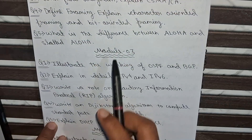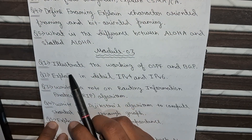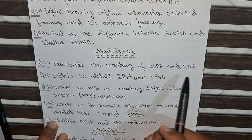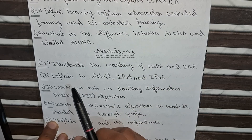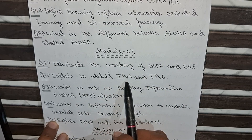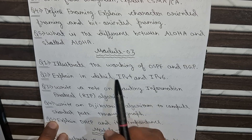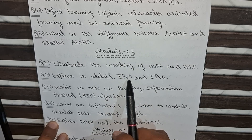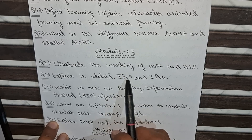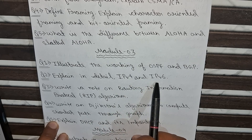The first question of Module 3 is: Illustrate the working of OSPF and BGP. The second question is: Explain in detail IPv4 and IPv6. This question may be asked in two ways — one focusing on IPv4 and another on IPv6.